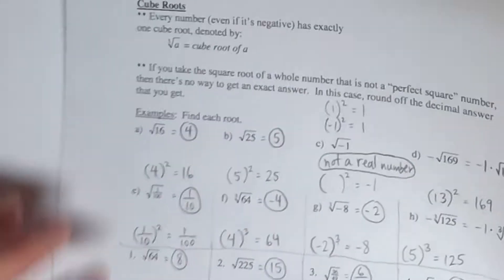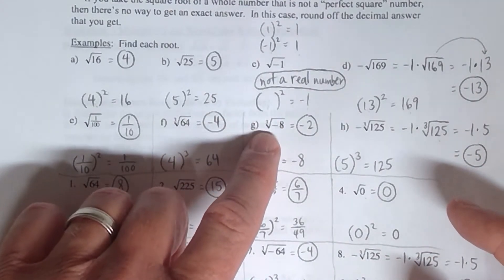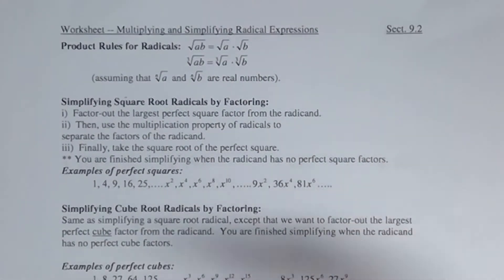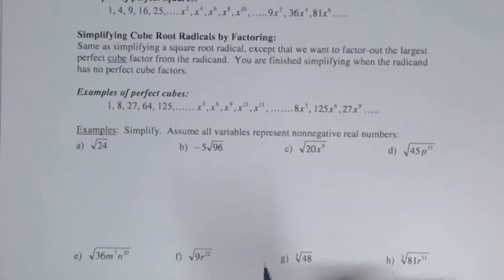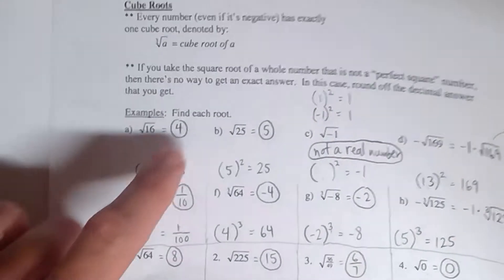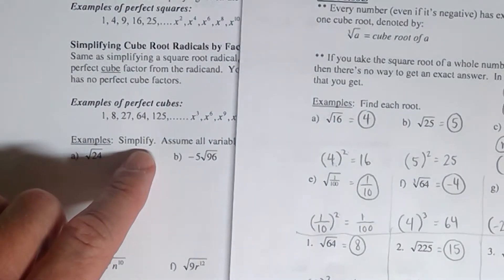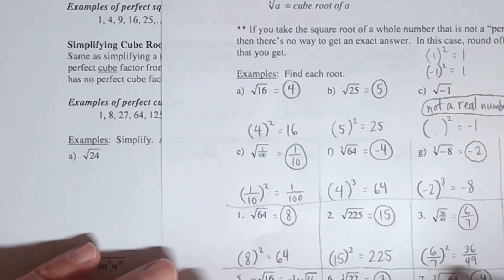In 9.1, we learned how to find either a square root or a cube root — if it had the little 3 above the V part of the radical symbol, we actually learned how to find those roots. What we're going to be doing now is simplifying radicals, and I want to make it clear that it sounds like it's the same thing, but it's not.